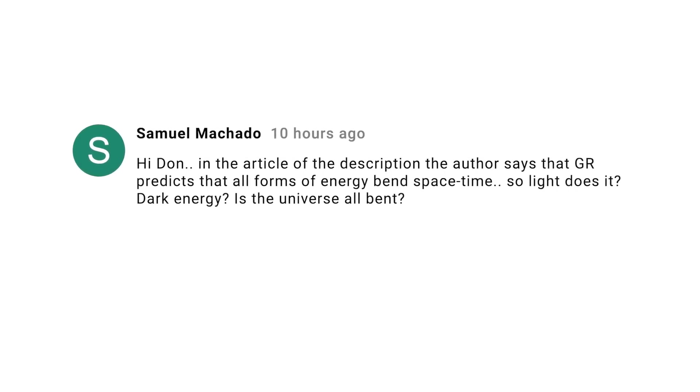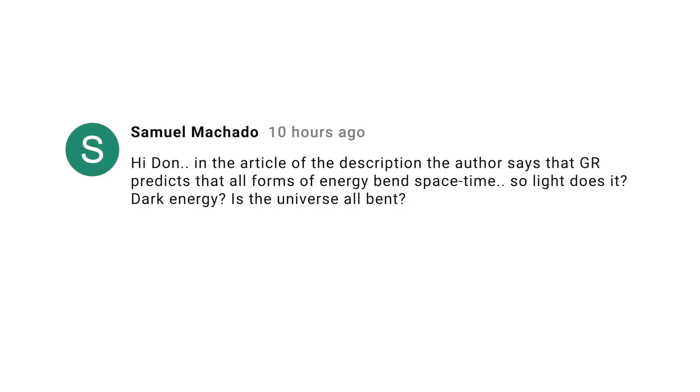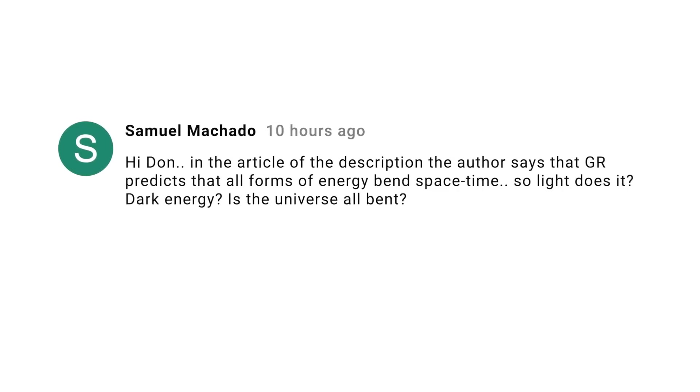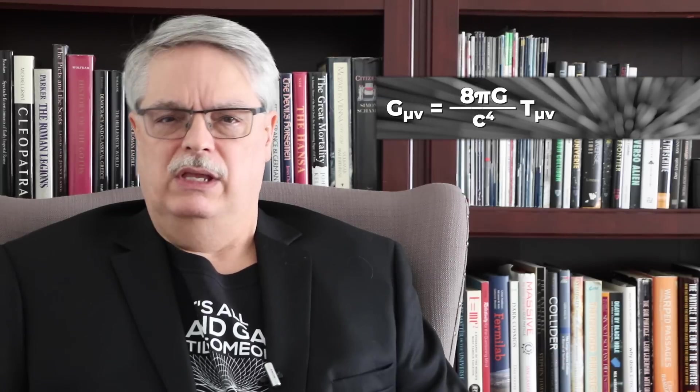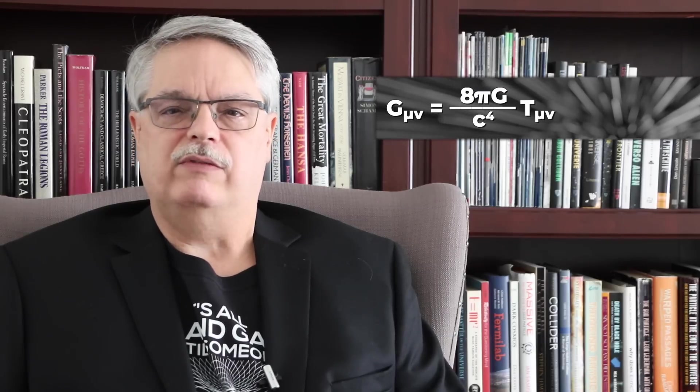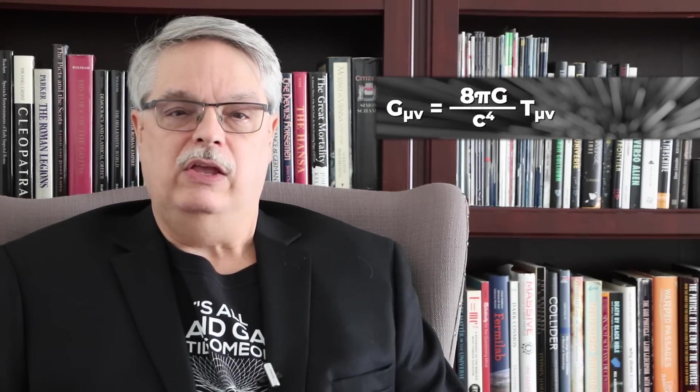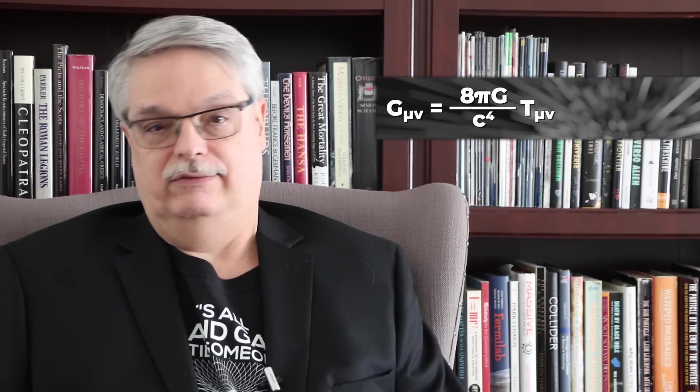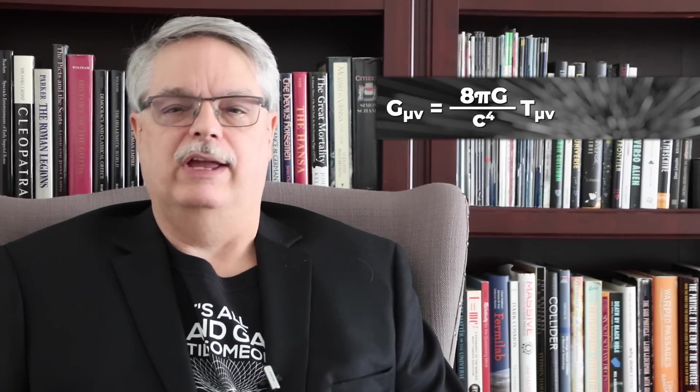Samuel Machado notes that general relativity describes the bending of space and time by matter and energy, and asks if all forms of energy must be considered. Yes, all energy contributes to the distortion of spacetime. However, not all energy is of equal impact — matter is a particularly dense form of energy, so matter is generally a much bigger deal. That fact allows scientists to make approximations to Einstein's theory, which makes them easier to solve. However, there are situations where gravity is super strong, where the energy of gravity must be taken into account. In that situation, you have to use the full equations of general relativity. And if you do that, be prepared for a headache because they're really hard.